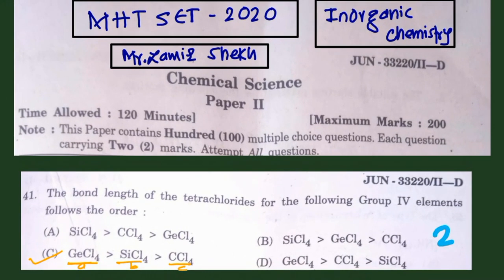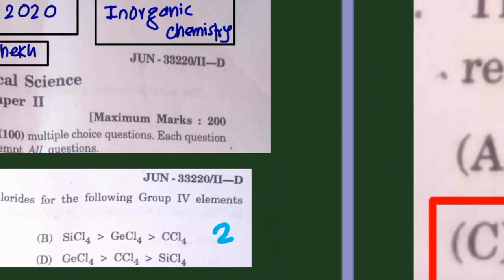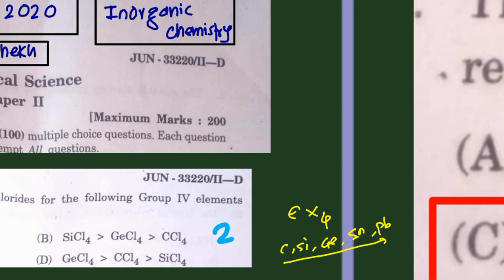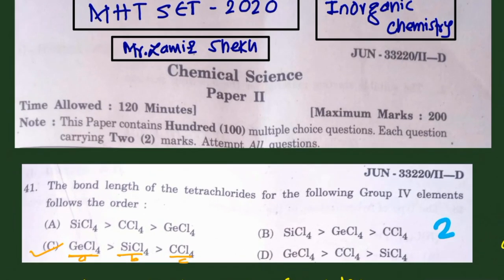Question number 41 is a two-mark question about bond length of tetrachlorides of Group 14 elements — we have to identify the correct order. The general formula is CX4, where X can be carbon, silicon, germanium, tin, or lead. A similar example asked in exams involves SiCl4, CCl4, and GeCl4. You know that from top to bottom (carbon to lead), the size increases, and the halides follow X = F, Cl, Br, I.